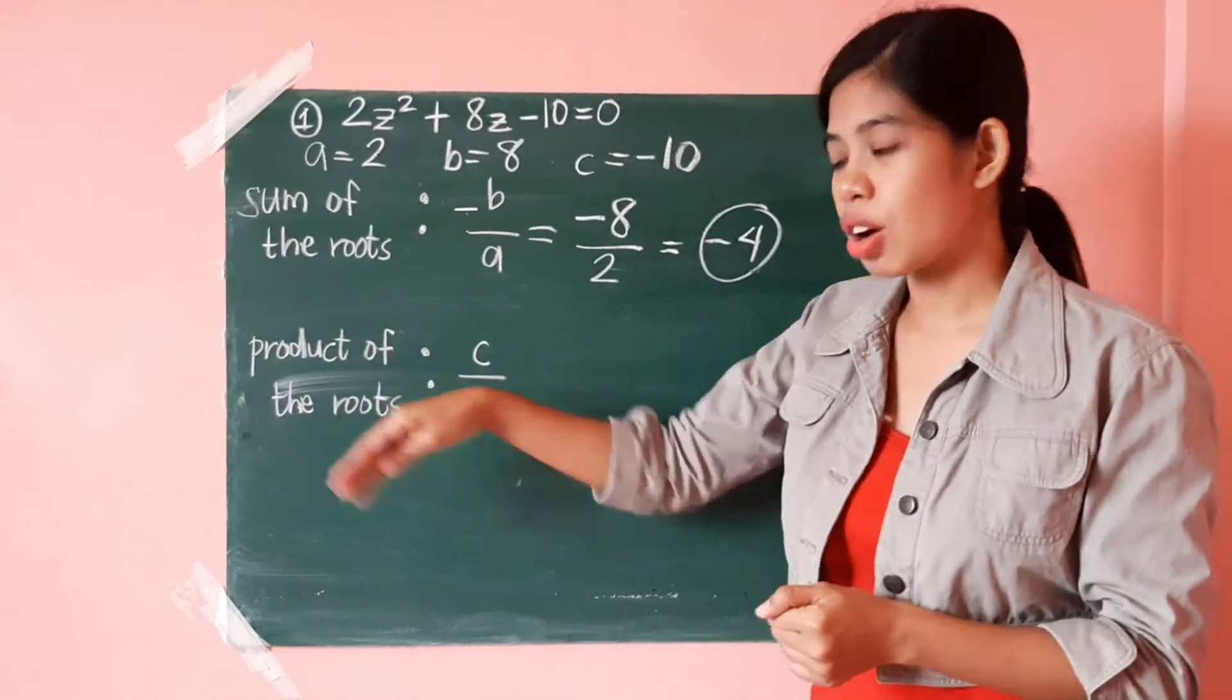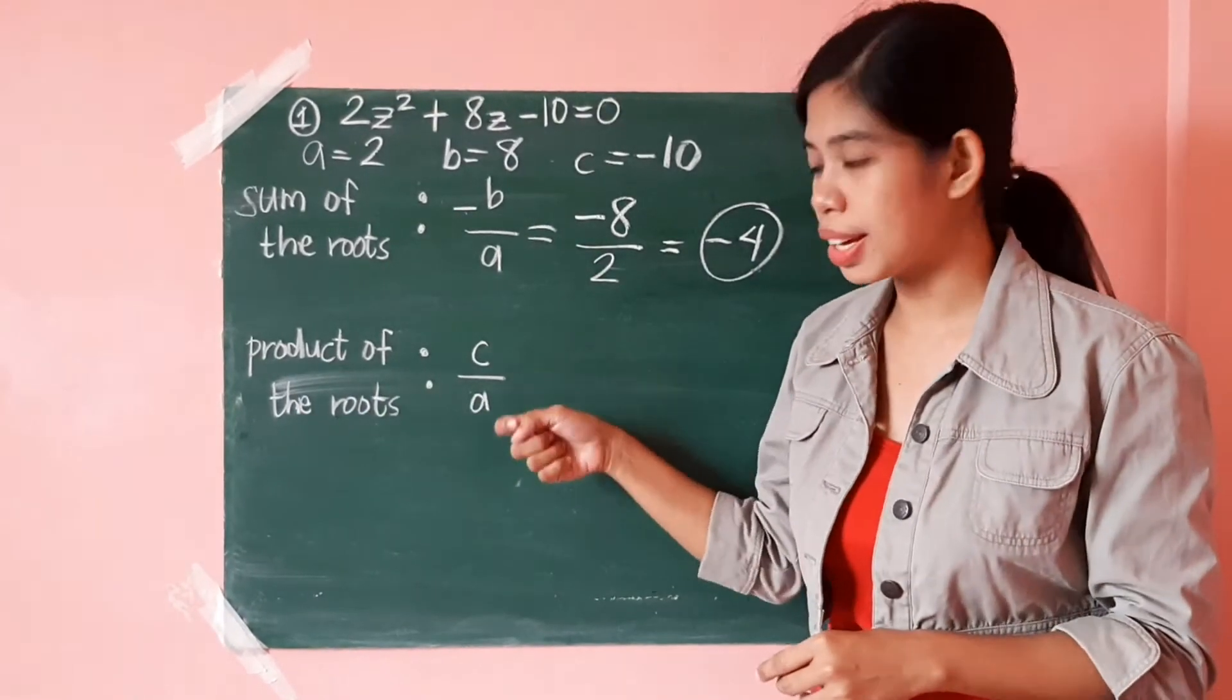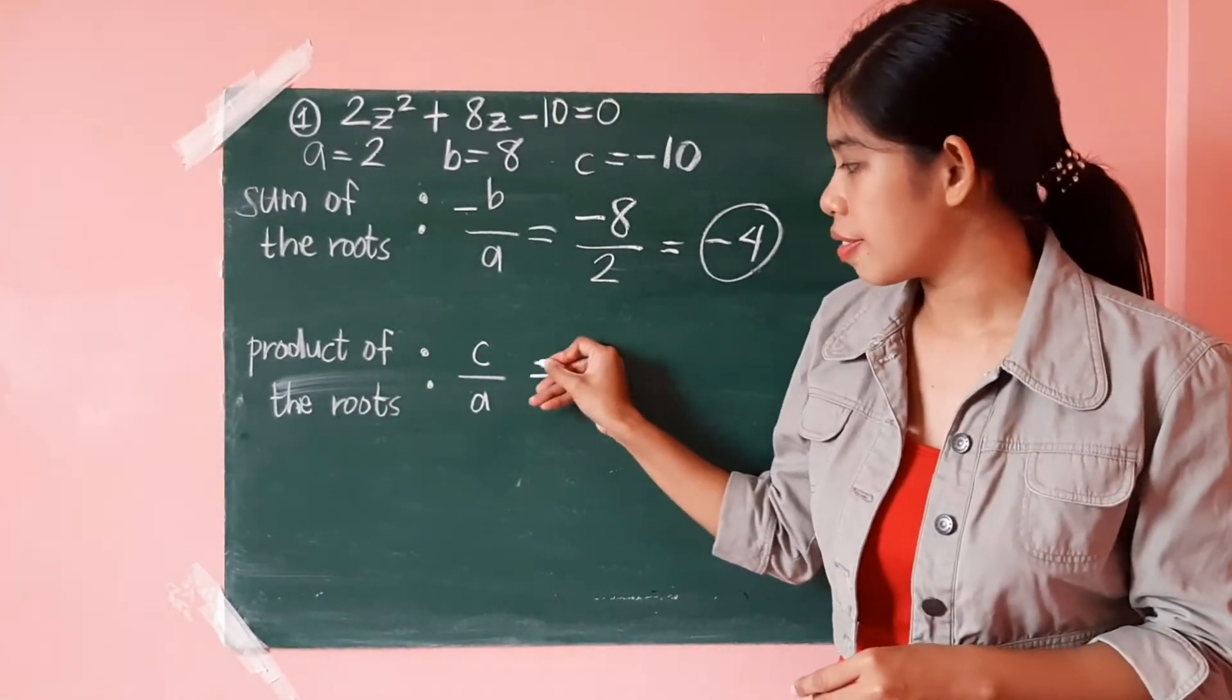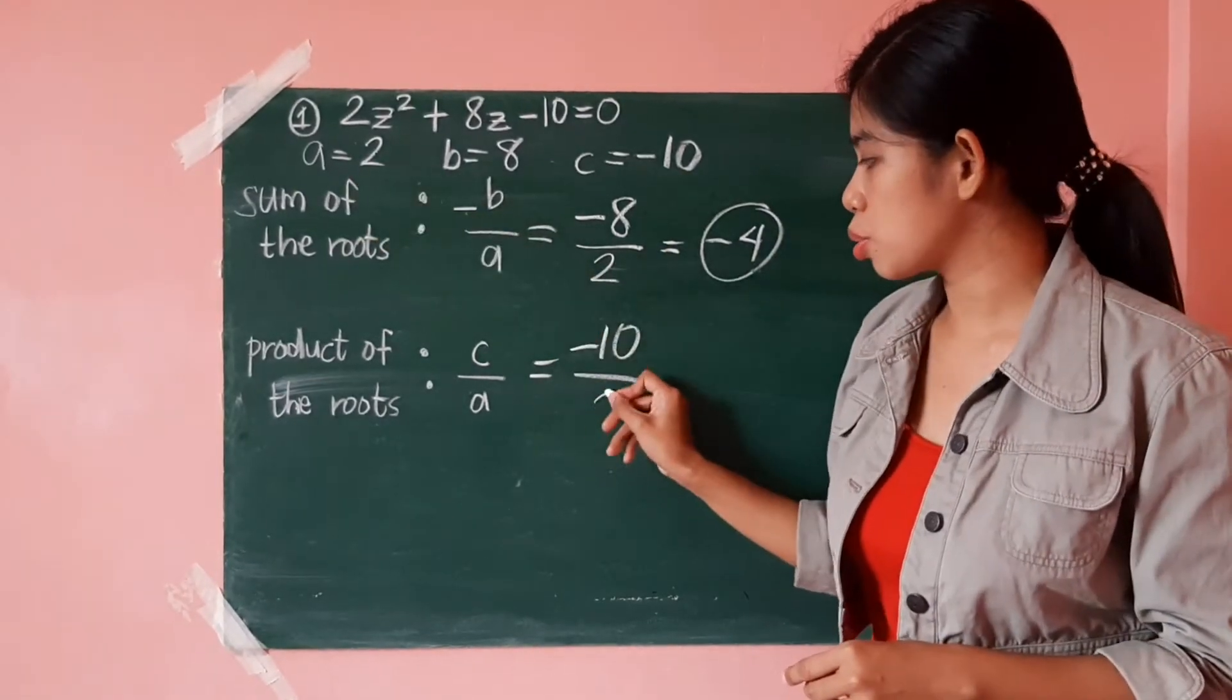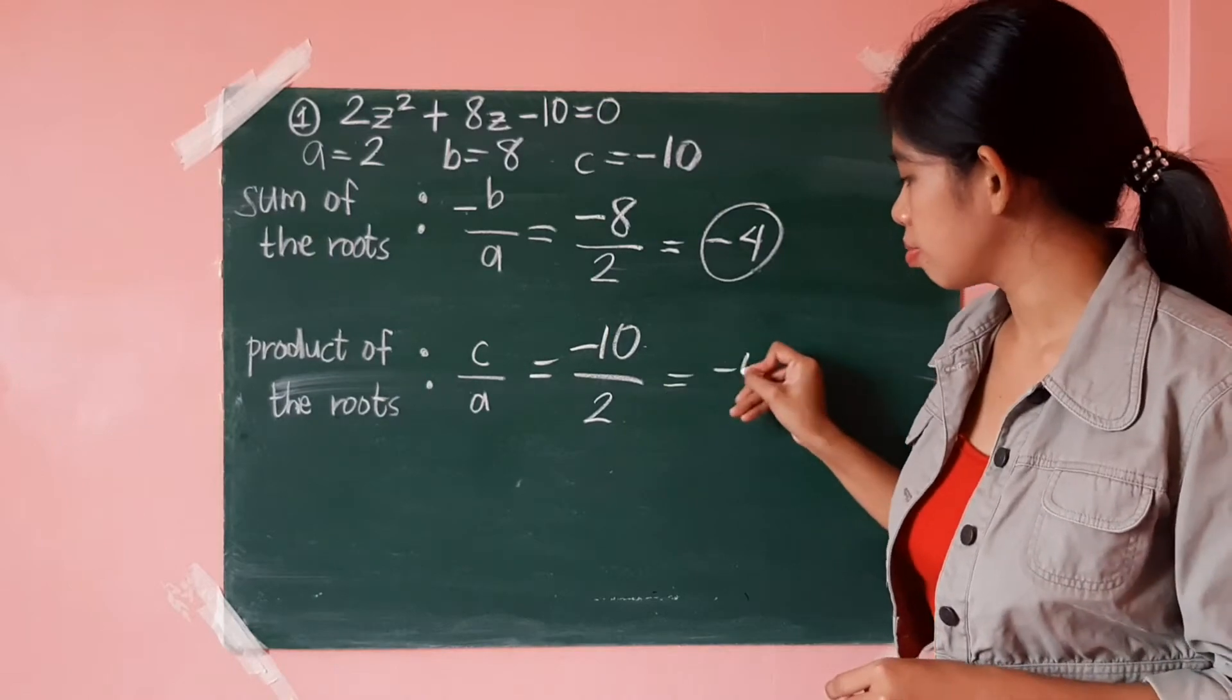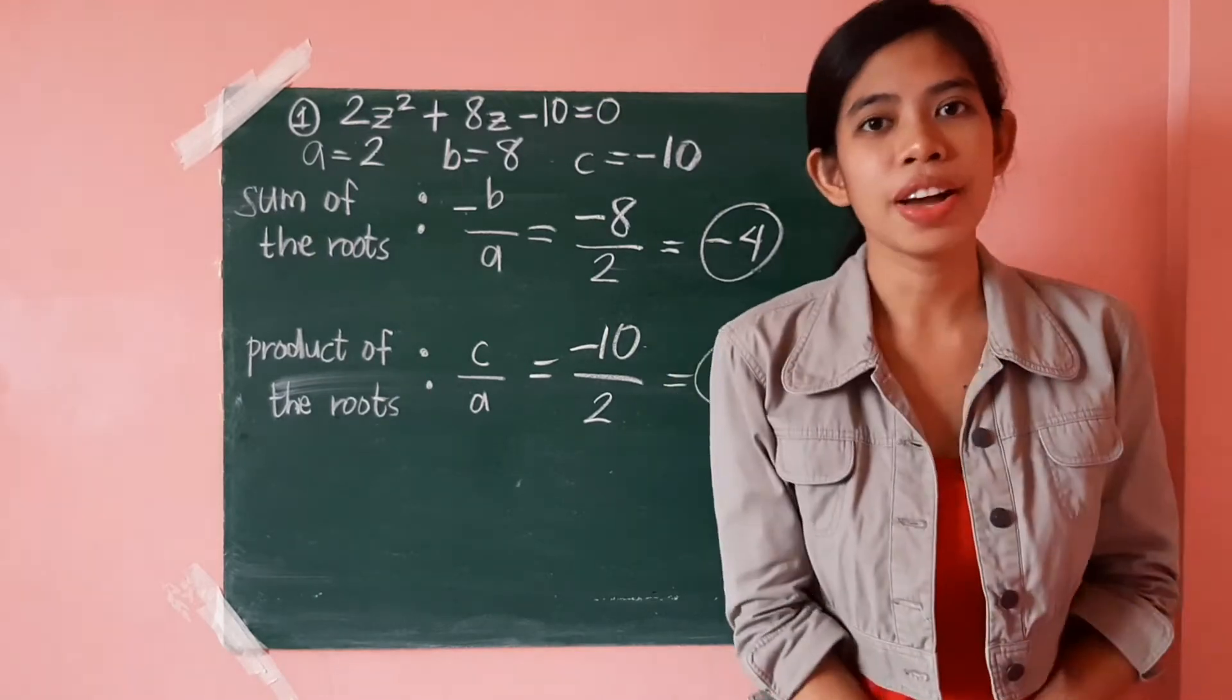And, in finding out the product of the roots, we just have to apply c over a. And, the value of c here is negative 10, over the value of a is 2. Negative 10 divided by 2, simply negative 5.